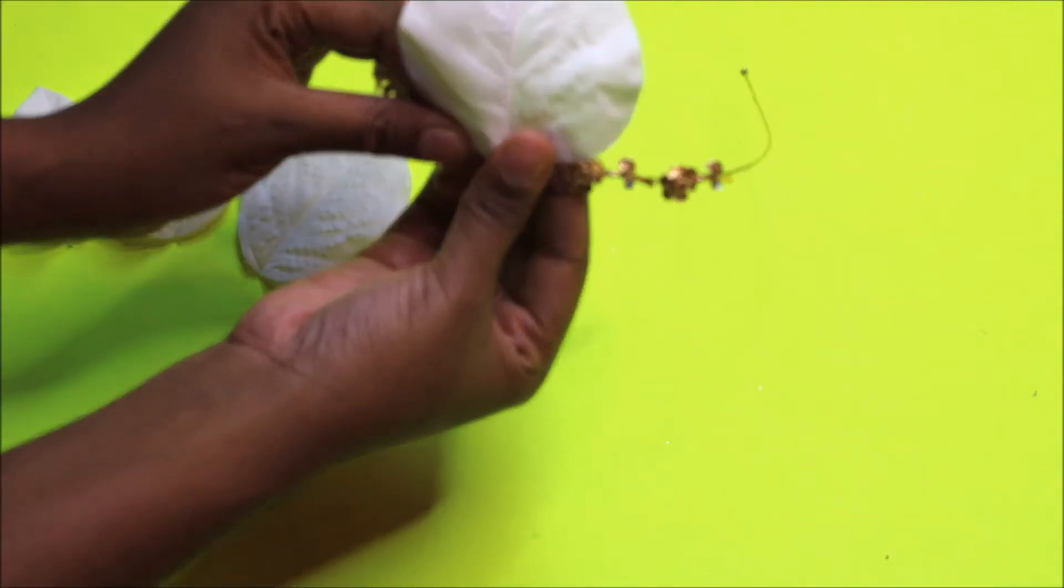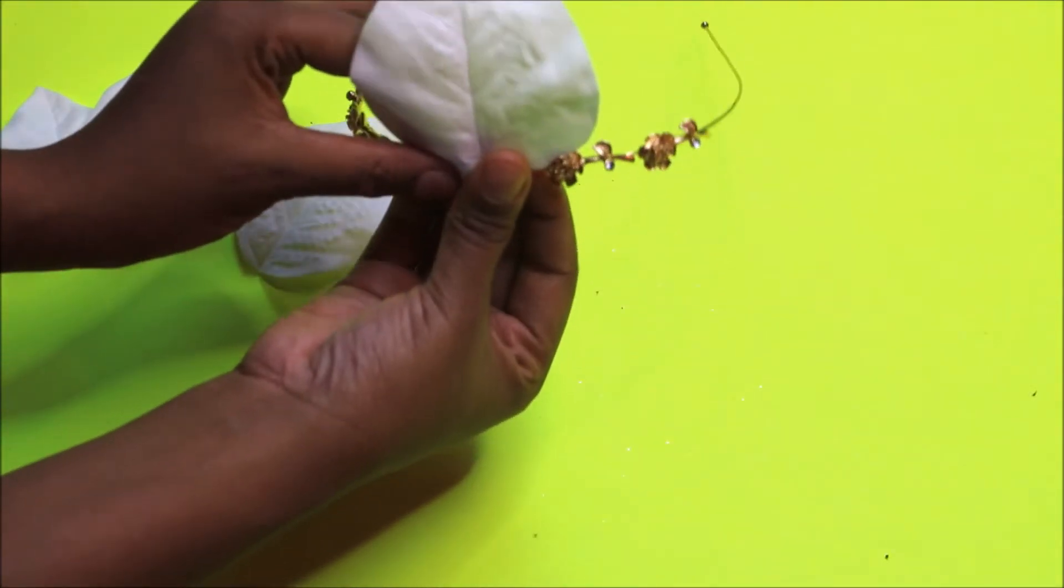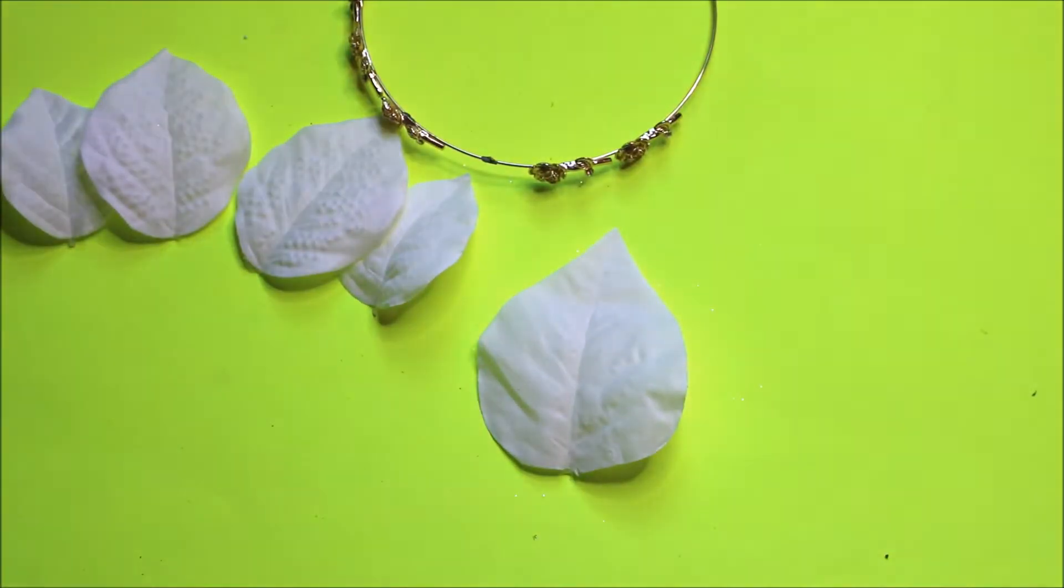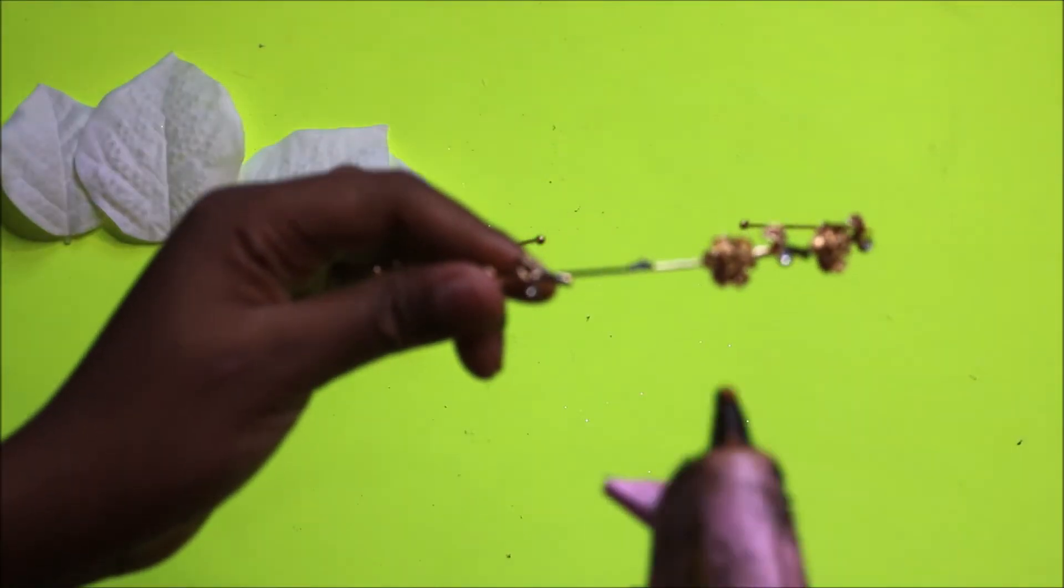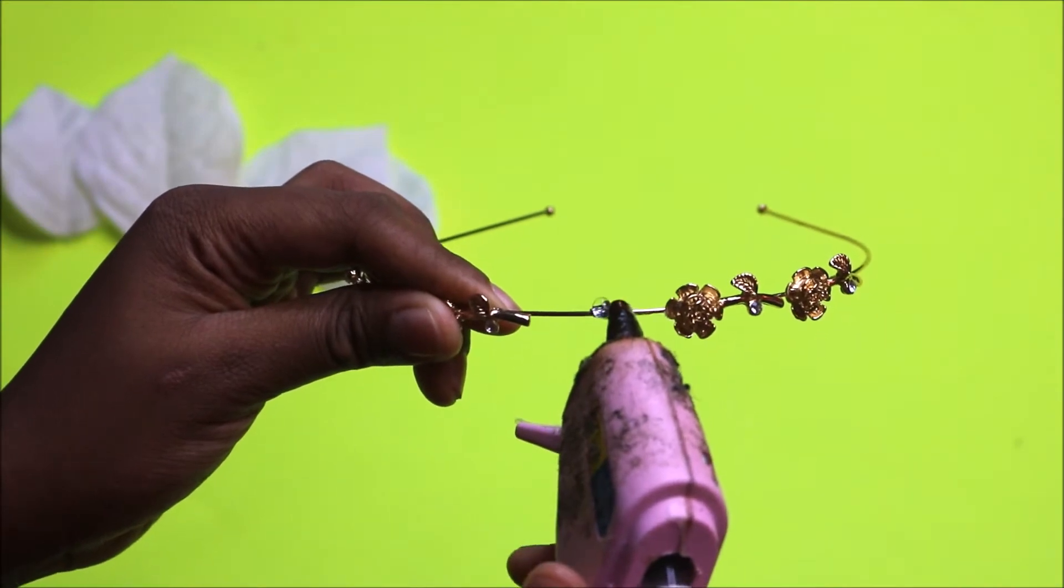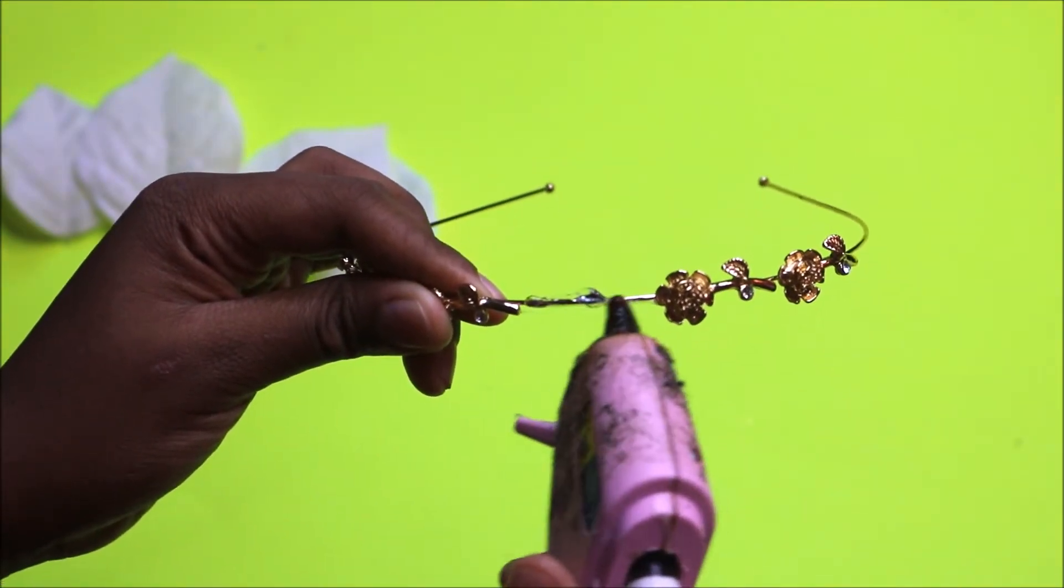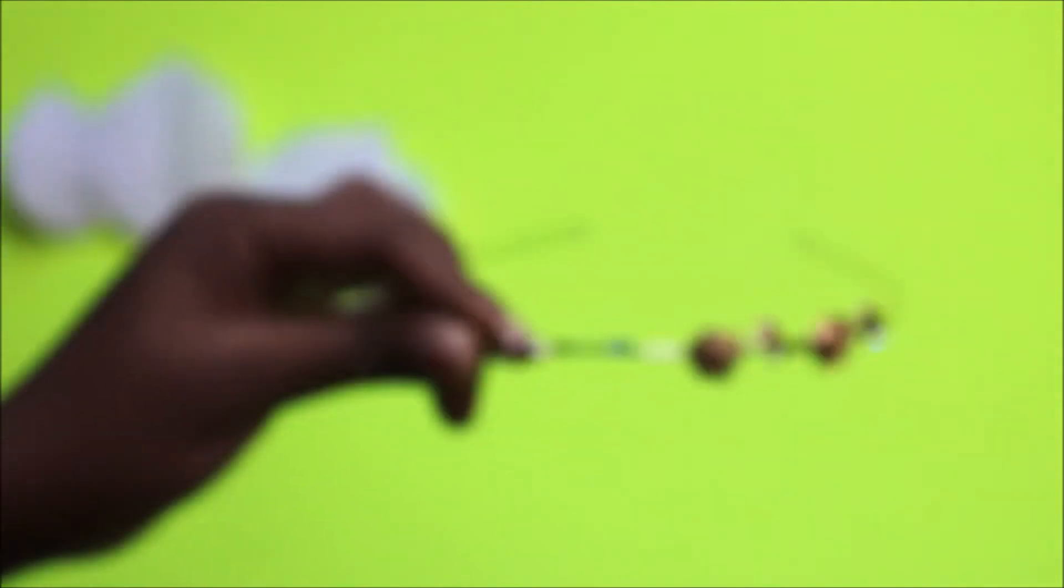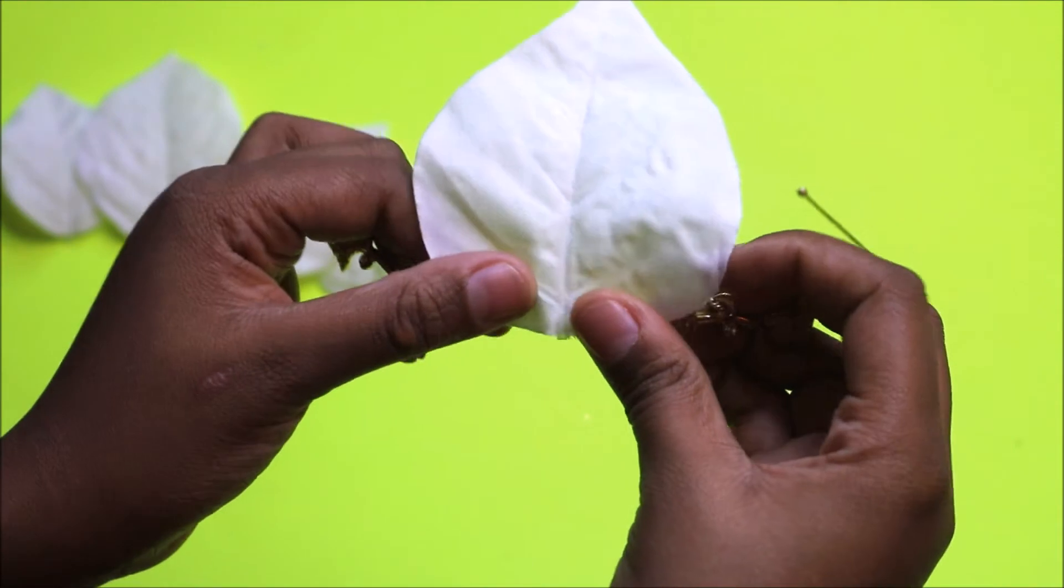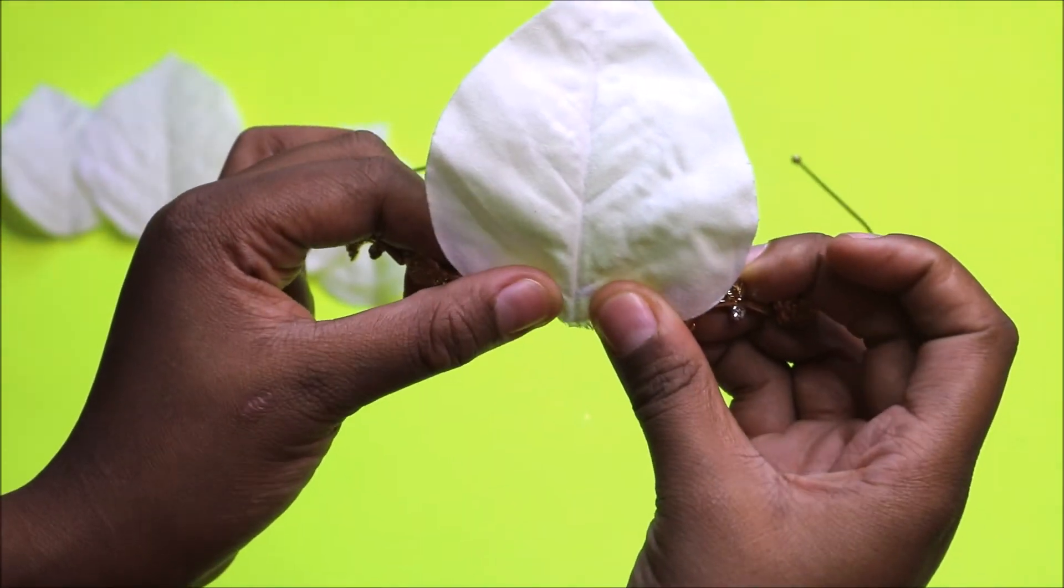So taking your first large petal, you want to place it right in the center of your crown. Next, I'm going to take a bead of my hot glue and place it right in the middle to adhere to that petal. Once you place the petal on top, you just want to press it to make sure it's stuck on.